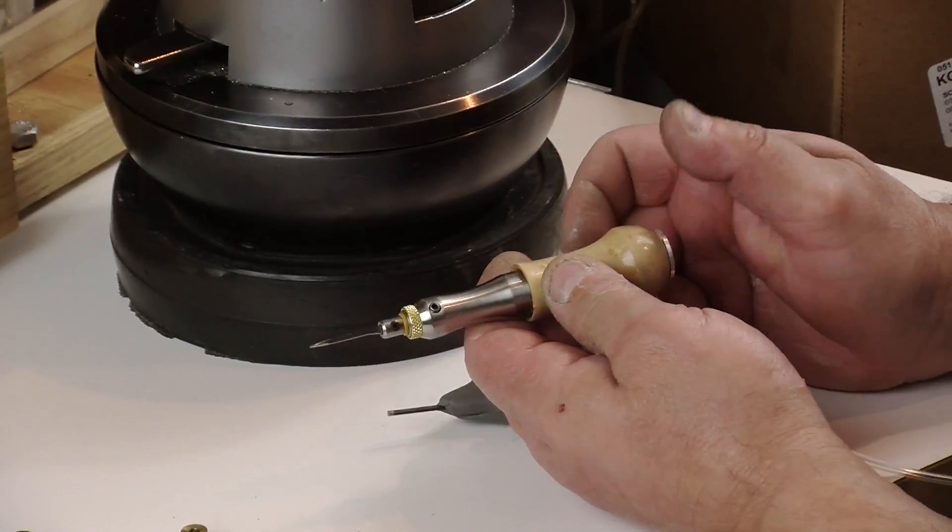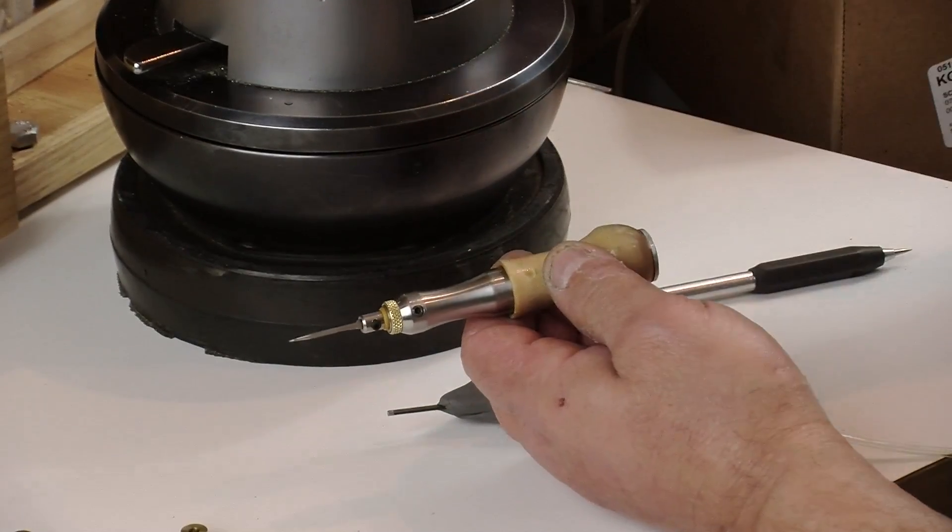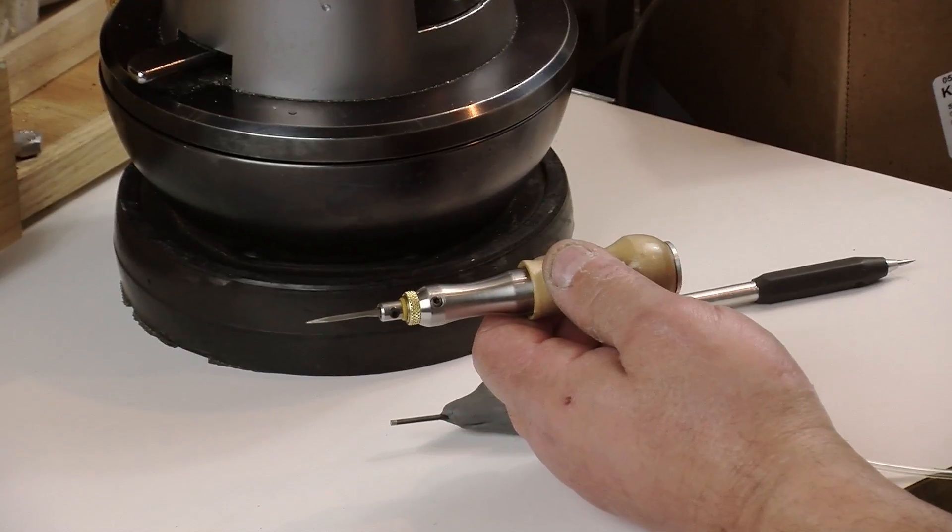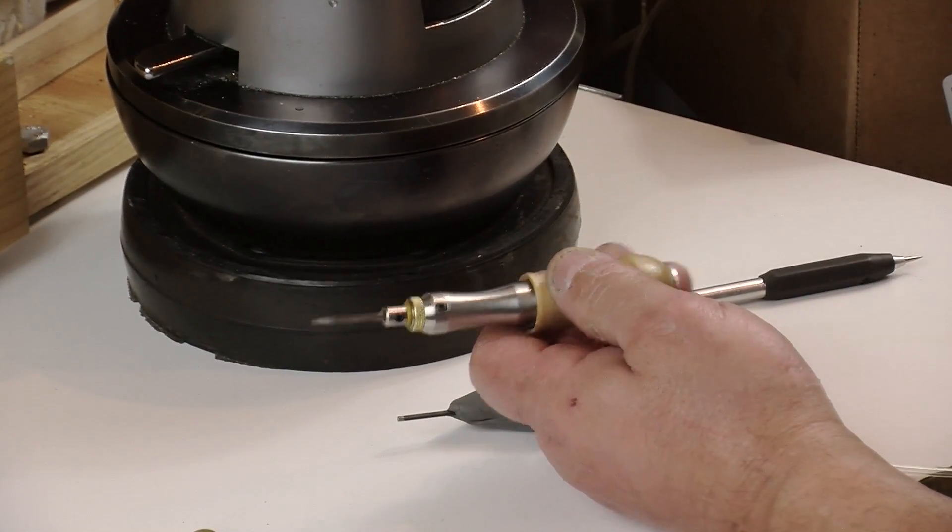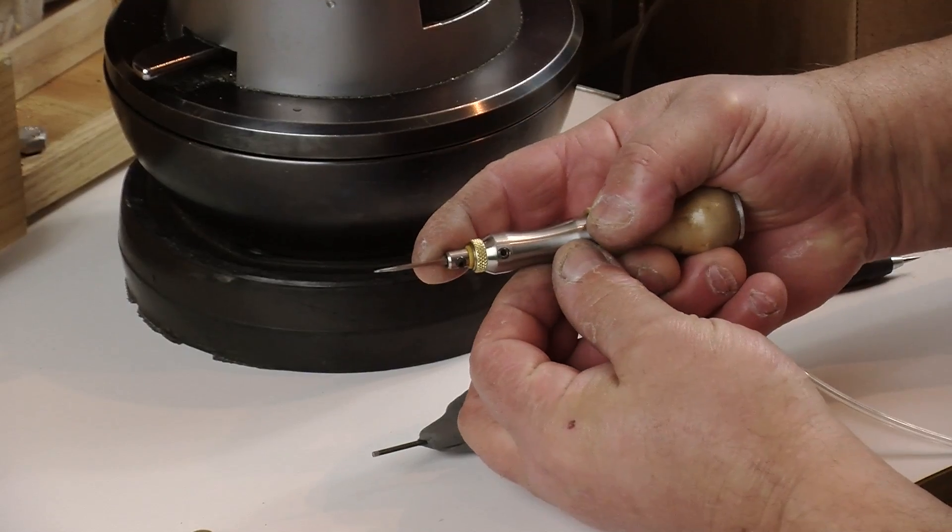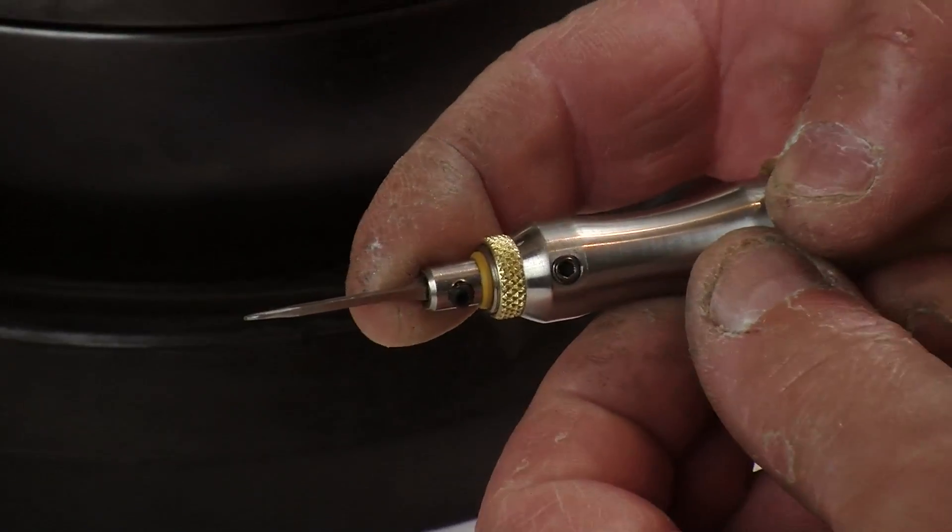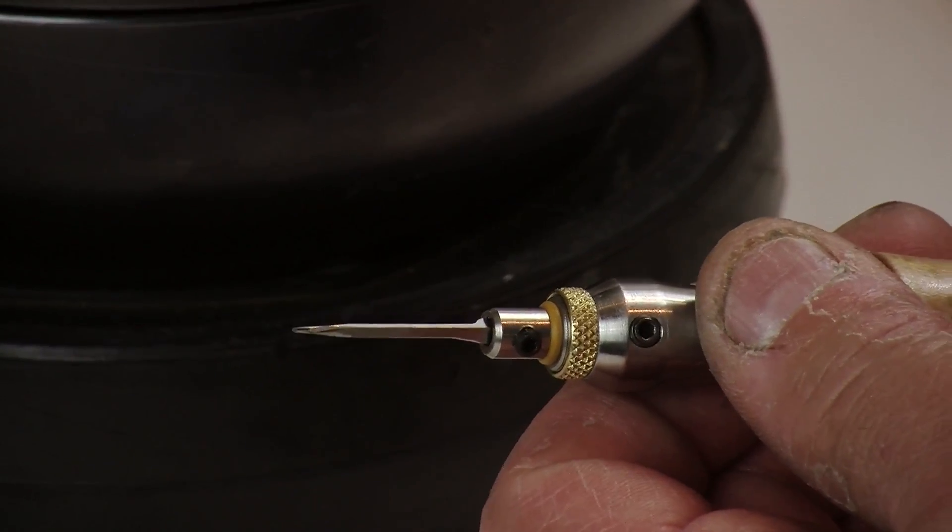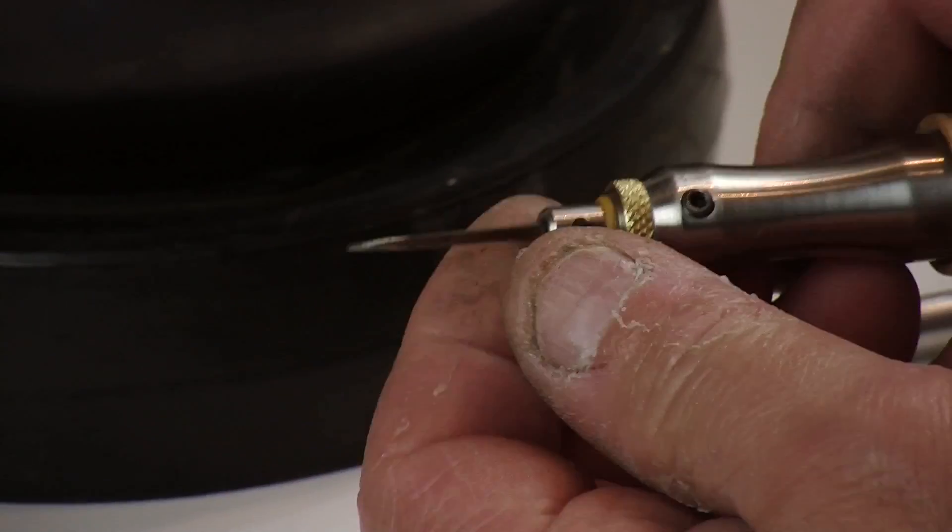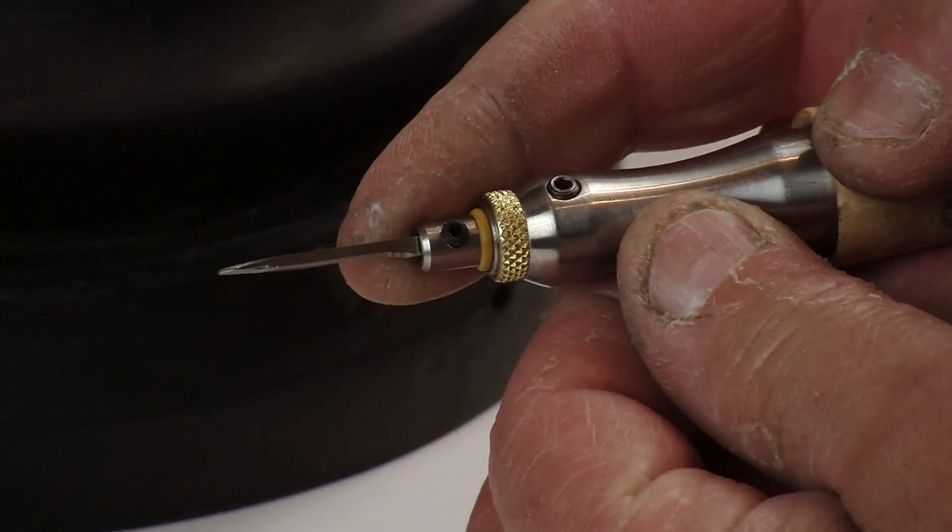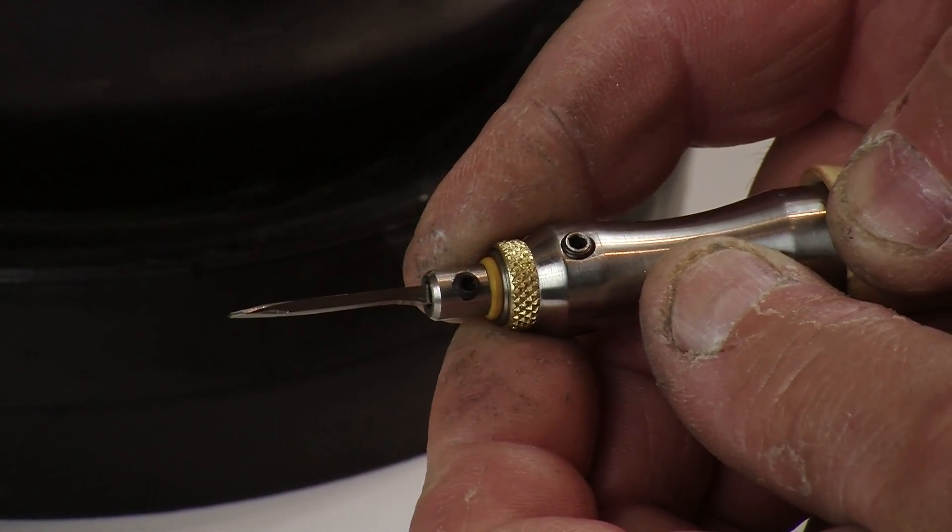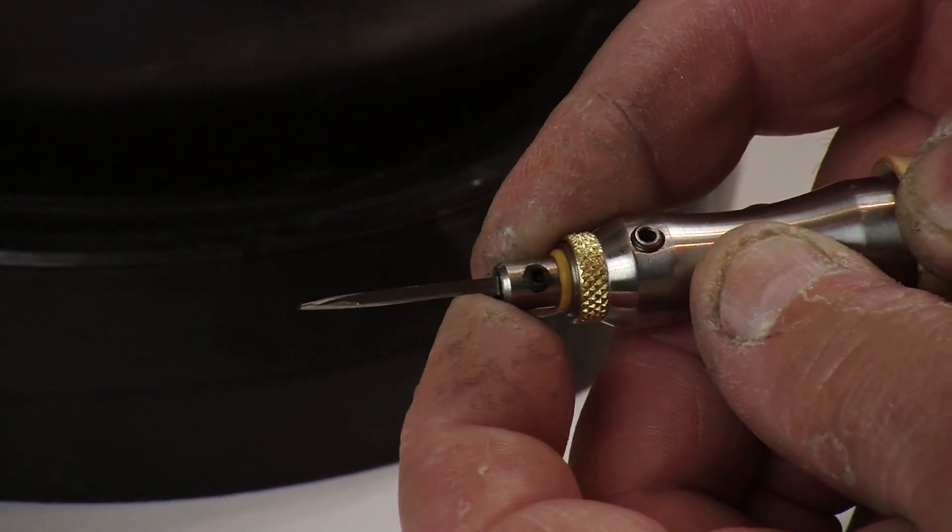Basically, you have those three adjustments: your pressure. For example, I now have my pressure up at about 90 psi. As I turn the pressure down to about 70 psi, I think you can hear the difference in how it's striking.